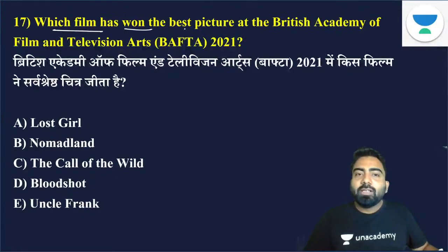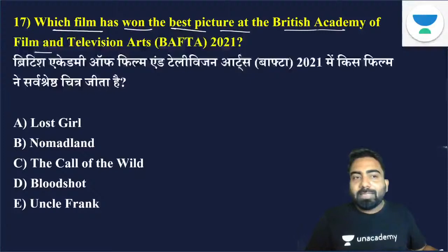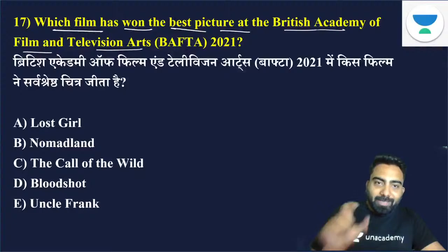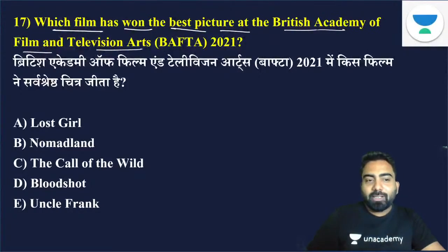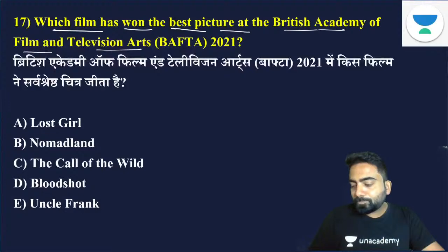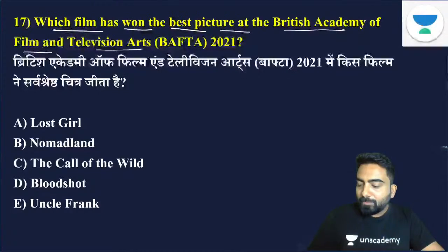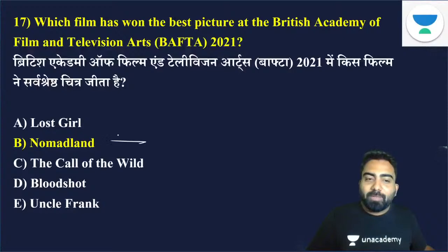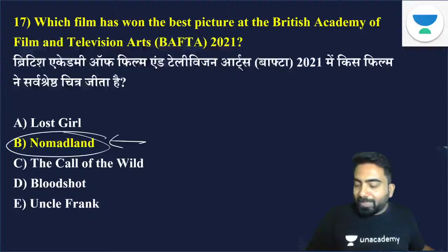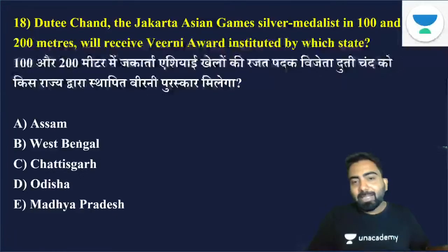Which film has won Best Picture at the British Academy of Film and Television Arts 2021? The answer is Nomadland — option B is the right answer.